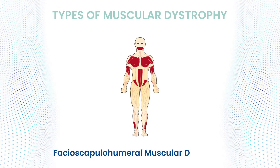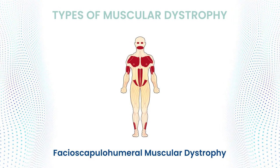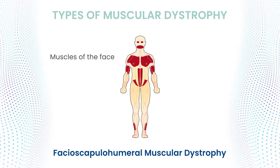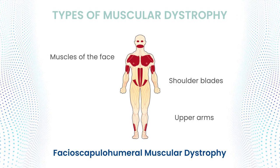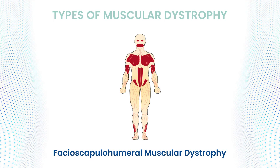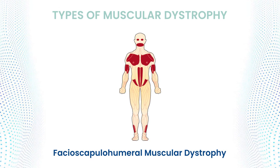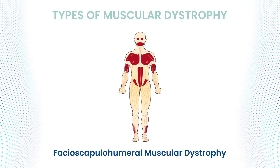Facioscapulohumeral muscular dystrophy, FSHD, typically begins in the teenage years and affects the muscles of the face, shoulder blades, and upper arms. Weakness in these areas can lead to difficulties with facial expressions and arm movements.